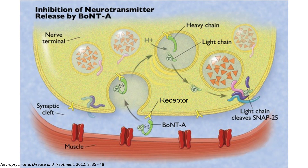Botulism is caused by the BoNT neurotoxin first binding to receptors on the surface of the neuron, which triggers the internalization of the protein into the cell through endocytosis. Once there, the heavy chain and the light chain are cleaved apart, and the light chain, which contains the zinc endopeptidase unit, then goes on to cleave the SNAP25 protein. It is this SNAP25 cleavage that triggers the downstream effects, which can ultimately lead to paralysis or even death.